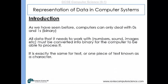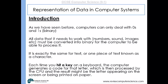And it's exactly the same for text. One piece of text is known as a character. So each time you hit a key on a keyboard, the computer will generate a unique code for that letter, which is then processed by the CPU. The result might be the letter appearing on the screen or being printed to paper.